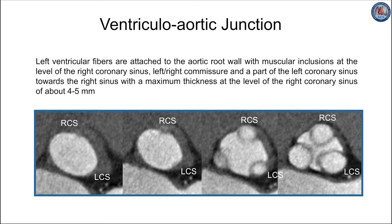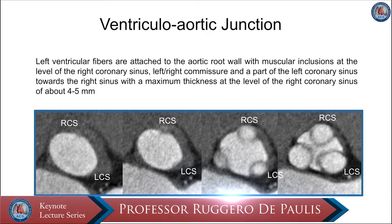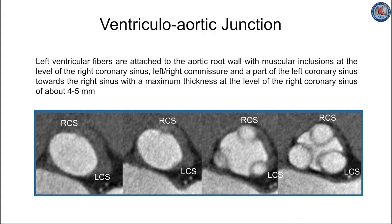From the histological point of view, the thickness of the ventricular-arterial junction is variable along the aortic root circumference, as the process of muscular inclusion thickens the respective portion of the root. The left-right commissure and the right coronary sinus are significantly thicker, with a maximum thickness at the level of the right coronary sinus of over 5 mm. In the rest of the circumference, the muscular inclusion of the left ventricle gives way to the membranous septum and mitral-aortic curtain, with a mean thickness lower than 1 mm. For these reasons, the overall thickness of the root is about 3 mm.